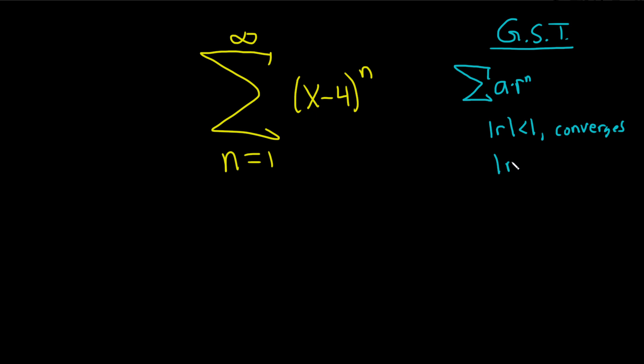If the absolute value of r is greater than or equal to 1, then you have a divergent series, so the series diverges.